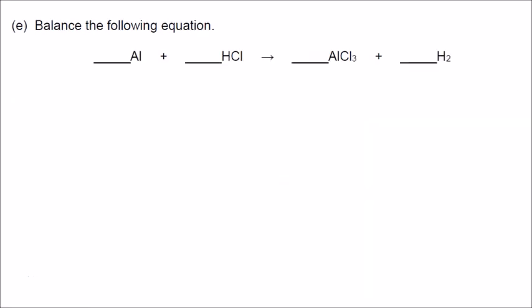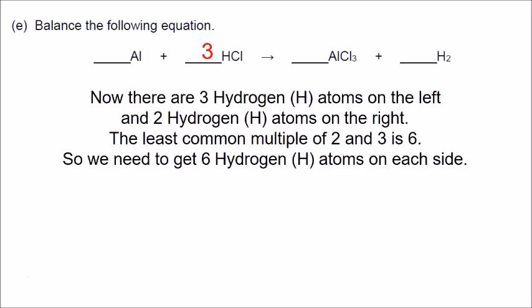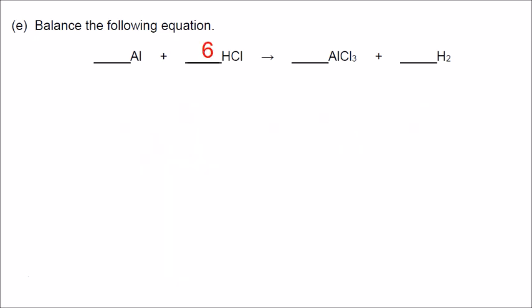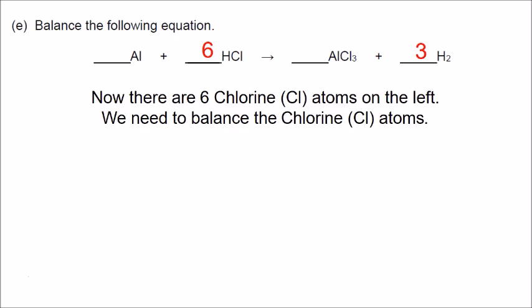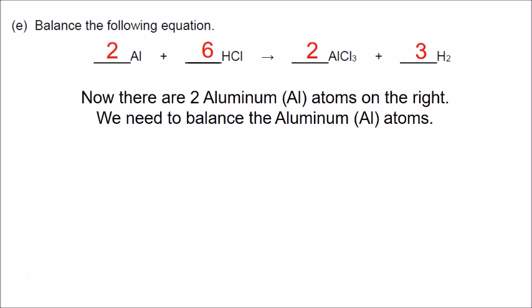Part E: balance this equation. There are 3 chlorine atoms on the right, so we put a 3 in front of HCl. But we have 3 hydrogens on the left and 2 on the right. The least common multiple of 2 and 3 is 6, so we put a 6 in front of HCl and a 3 in front of H2. Now there are 6 chlorine atoms, so we put a 2 in front of AlCl3, and then a 2 in front of Al to balance aluminum. The equation is balanced.